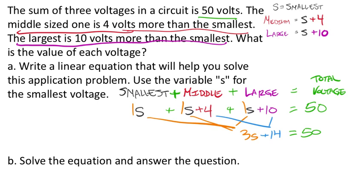Now, principles of equality. First up, let's get rid of that 14, so minus 14 on both sides. We get 3S which is going to equal 50 minus 14. That's 36. And then for my small voltage, I'll divide both sides by 3. So that's 1S. 36 divided by 3 is 12. 12 volts.